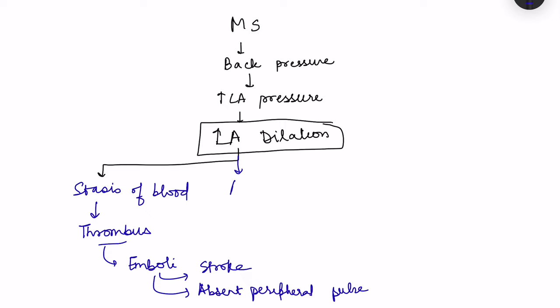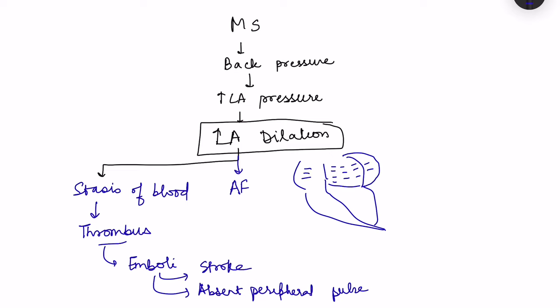Left atrial dilation can also lead to atrial fibrillation. When there is an increase in the size of the atrium, the impulse traveling to depolarize the heart — by the time the impulse reaches the far portion, the initial portion has already repolarized, so the impulse can travel back again, establishing re-entry circuits. It is important that by the time depolarization is complete all areas remain depolarized; if some portions repolarize early the impulse can travel again, increasing chances of atrial fibrillation.